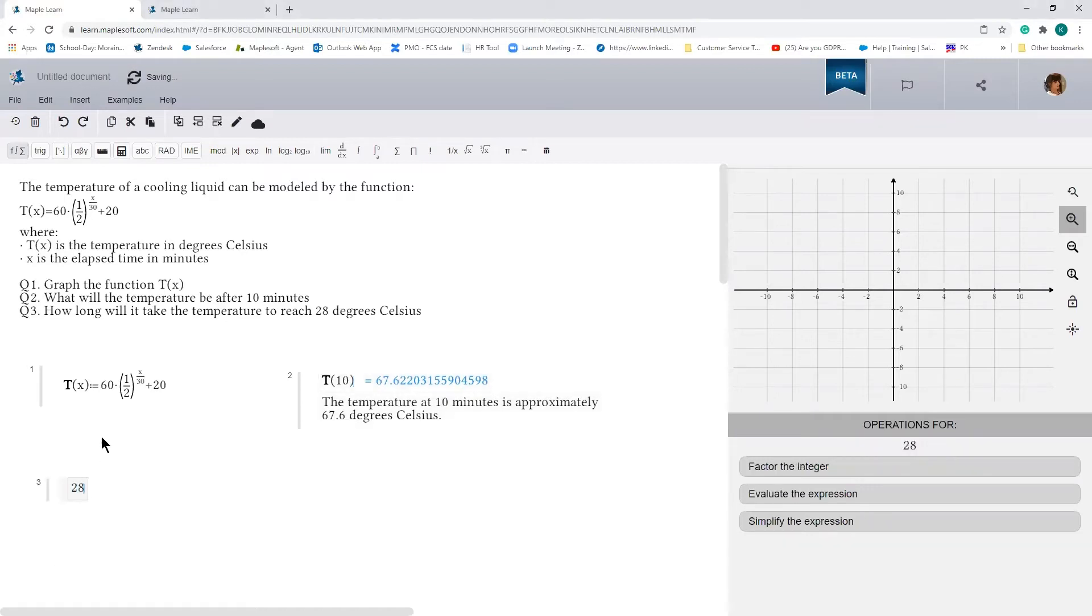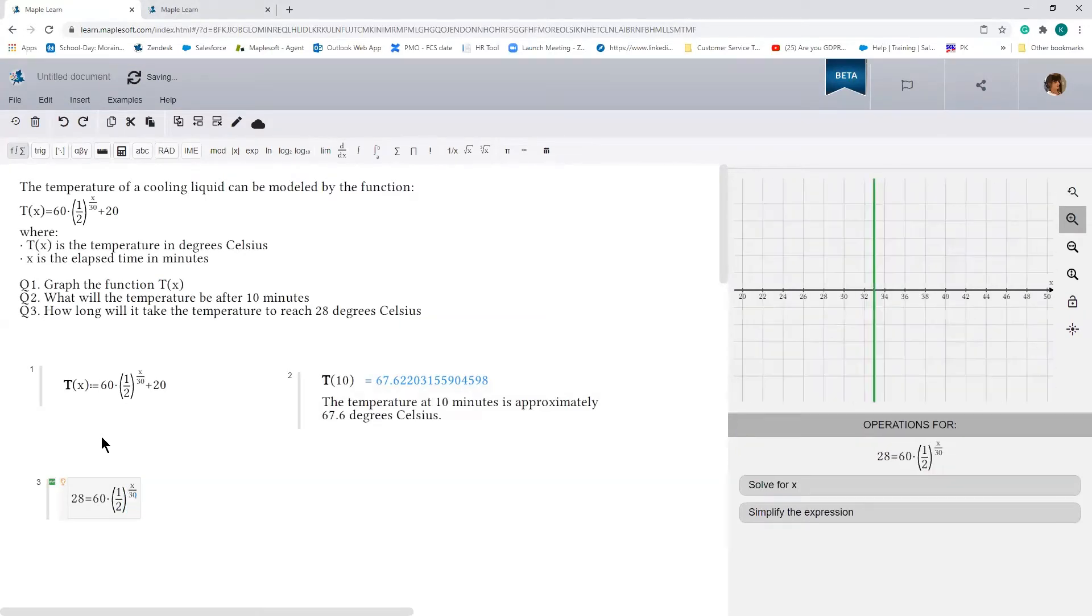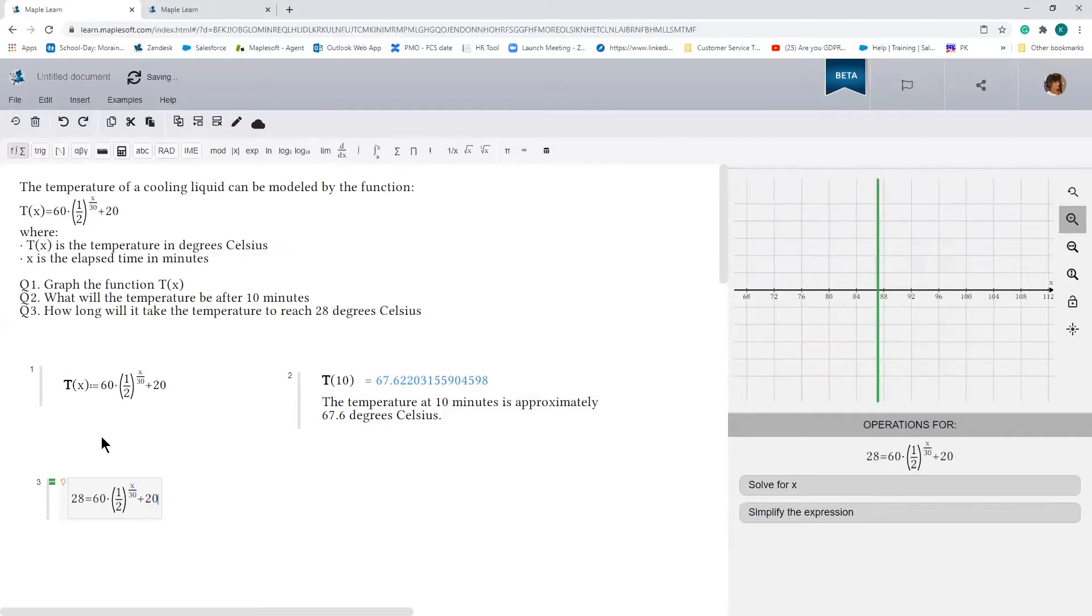We have 28 equals 60 times 1 half raised to the power of x over 30 plus 20. Now at this point, we could use Maple Learn's context panel to solve for x, but I prefer to reserve that particular gem for the very end when I'm checking the answer. Personally, I think there's no better high than solving the problem yourself and then confirming that what you did was right.